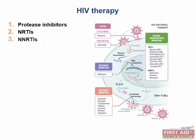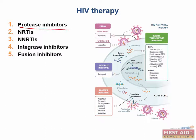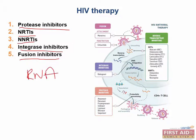The five classes of drugs used to treat HIV infection are the protease inhibitors, the nucleoside reverse transcriptase inhibitors, the non-nucleoside reverse transcriptase inhibitors, the integrase inhibitors, and the fusion inhibitors. The human immunodeficiency virus is an RNA virus that has an insatiable ability to mutate its genome, allowing it to evolve quickly and become resistant to most drugs we treat it with.